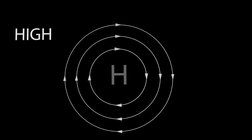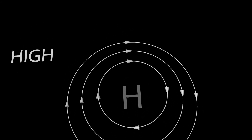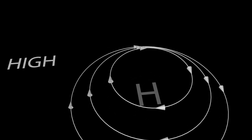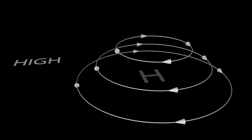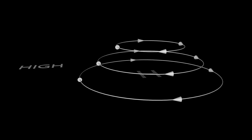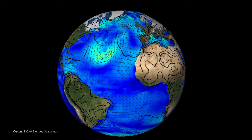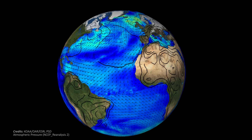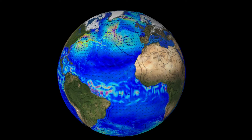Conversely, for a high pressure system, the flow is in the opposite direction. Note that the flow is along the contours of constant pressure known as isobars. Please take a look at a weather chart to see for yourself. In reality, other terms contribute to the flow around high and low pressure systems. However, the fundamental balance is what we call geostrophic.